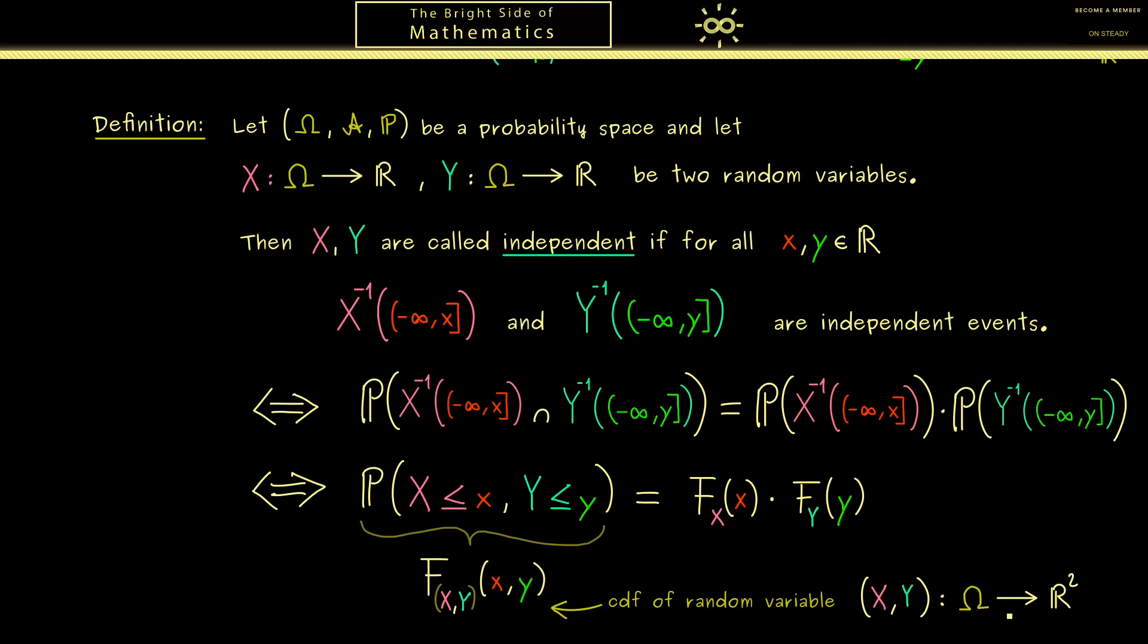Hence here the input space is still omega but the output space is R^2. In summary with this independence is easy to remember. It simply means that this CDF can be written as the product of these simple CDFs. Moreover I can tell you this here is often called the joint cumulative distribution function.